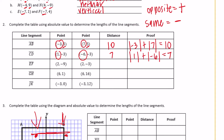For 2, negative 9 and 2, negative 3 — they differ in the y-coordinates and are on the same side of 0 because they're both negative, so we subtract. The absolute value of negative 9 minus the absolute value of negative 3 equals 6. For 6, 1 and 6, 16 — both positive, same side of 0, so we subtract: absolute value of 16 minus absolute value of 1 equals 15.